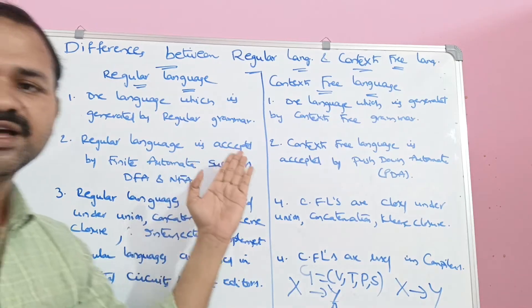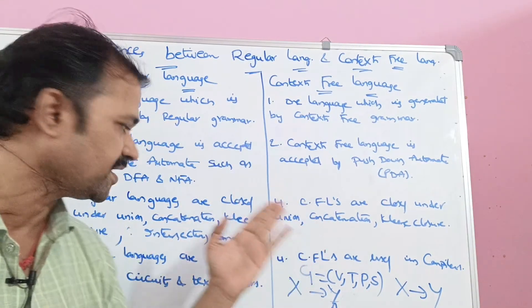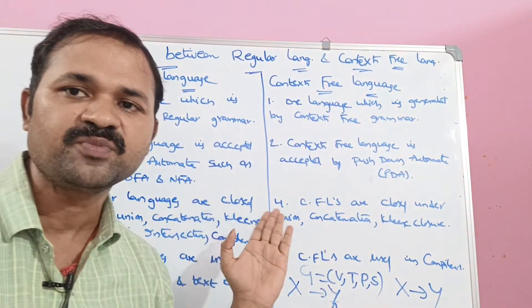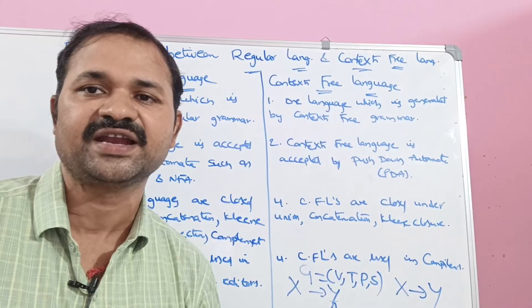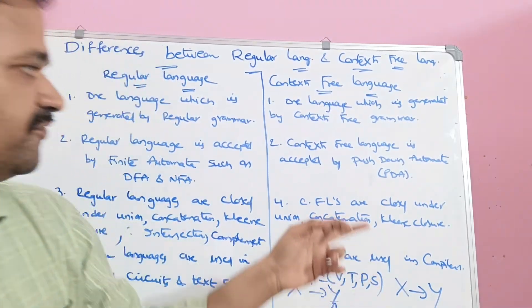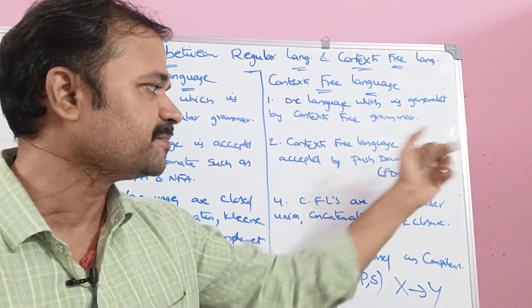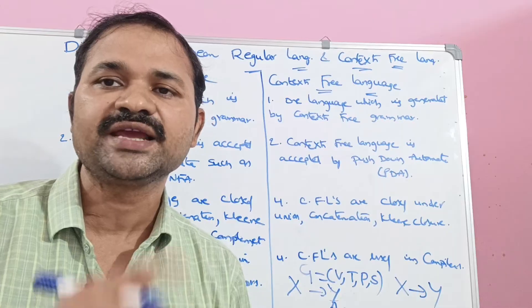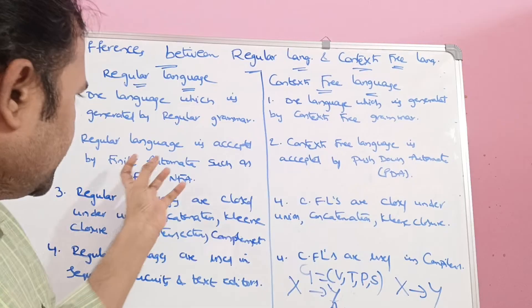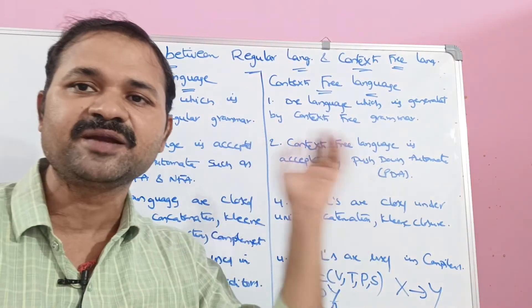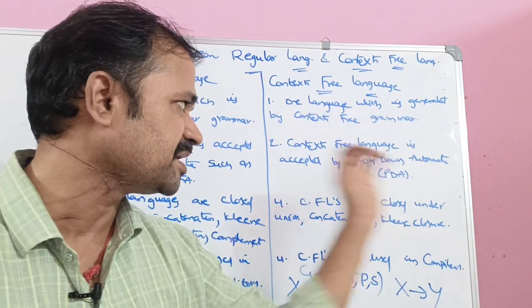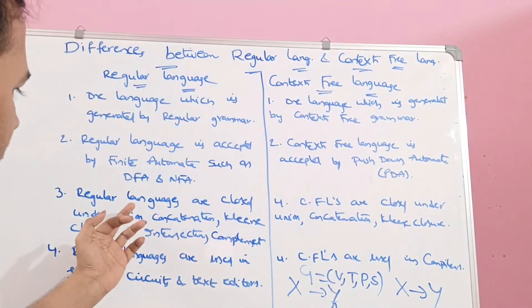The second difference is that regular language is accepted by finite automata — either DFA (deterministic finite automata) or NFA (non-deterministic finite automata). Context-free language is accepted by pushdown automata, in short PDA.